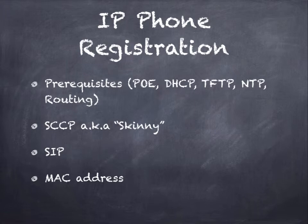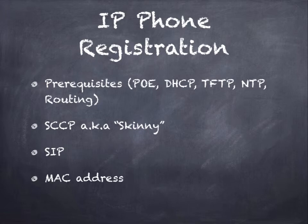Let's talk about the registration process. The prerequisites before a phone can register: it must be on a network with POE or a power brick, and it must receive DHCP. If the phone can't access a DHCP server, it won't be able to reach a TFTP server. If it can't reach the TFTP server, it won't know where the Call Manager is. You also need NTP running and correct routing — if you cannot ping between the phone and the Call Manager, the prerequisites for registration have not been met.